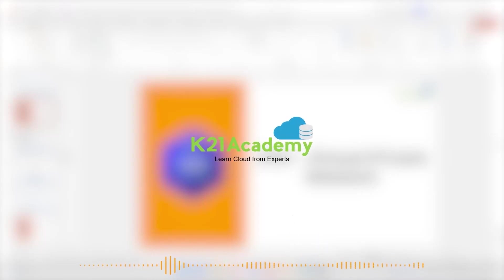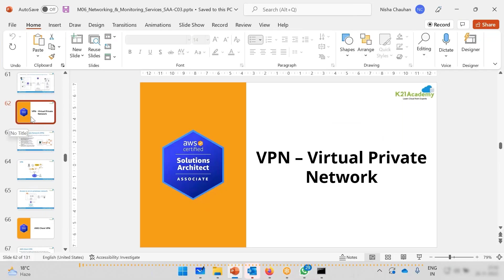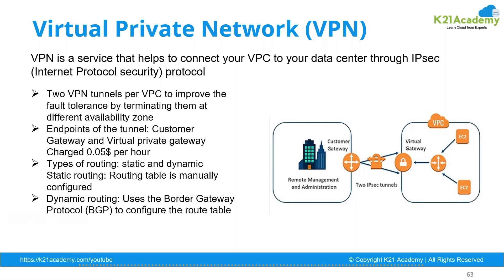Hello everyone, welcome back to another session by K21 Academy. Today our expert trainer will be discussing AWS VPN, so watch the video till the end. VPN, or Virtual Private Network, basically helps you to connect to your VPC from your data center through an IPsec tunnel. This is a traditional approach to connect two sites securely, not a cloud-specific approach — it has been used for ages and has been extended to cloud.